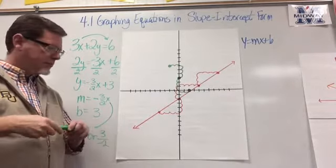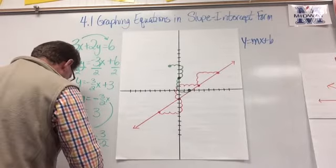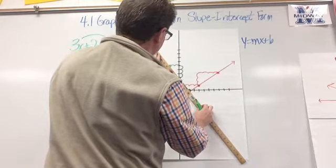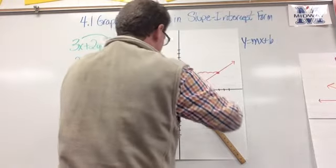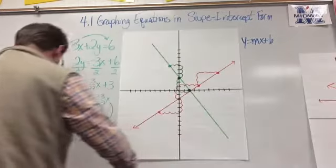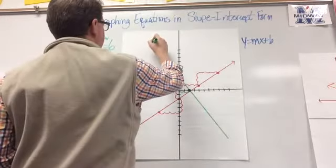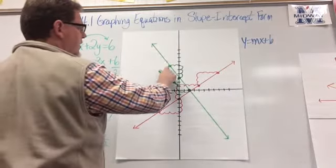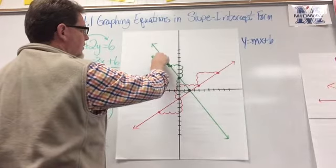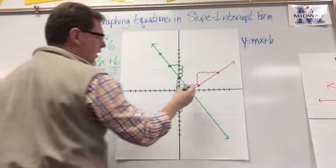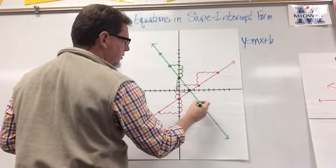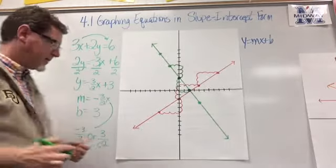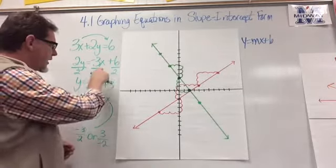I have three points on my line, so I get the ruler and draw the line, remembering to put arrows on each end. To verify: going up 3 and left 2 lands on the line, and going down 3 and right 2 also lands on the line — it works. The key rule is that when you have a negative slope, only one of the two numbers can be negative — your choice which one.